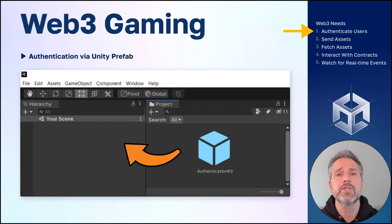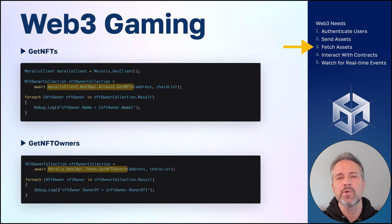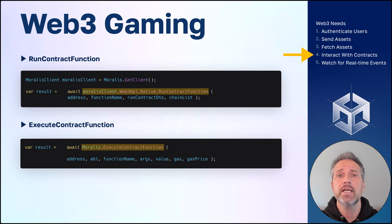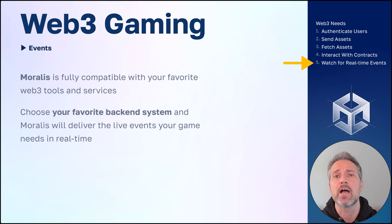To authenticate users with Morales, you use the Authentication Kit prefab — drag that into your scene and your authentication is handled. To send assets, you can use Execute Contract Function, for example to mint an NFT. To fetch assets from the blockchain, Morales offers many options including Get NFTs and Get NFT Owners. To interact with contracts, Morales offers Run Contract Function for read operations and Execute Contract Function for read and write operations. And to watch for real-time events, Morales is fully compatible with your favorite Web3 tools and services — you can connect Morales to your favorite backend and receive live events in real-time that your game needs.